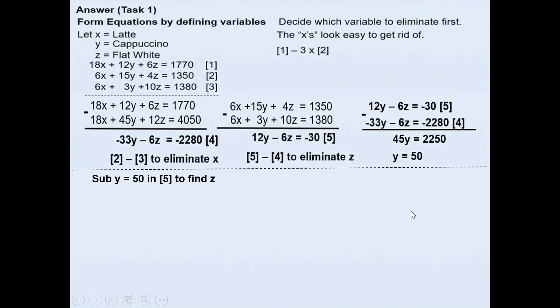Now we will substitute y equals 50 in equation 5 to find z. Equation 5 was 12y minus 6z equals negative 30. We substitute 50 in it. So 12 times 50 minus 6z is negative 30. 600 minus 6z equals negative 30. Take that on the other side. Minus 600 and minus 30 is minus 630. Divide by negative 6 on both sides will give you z value of 105.